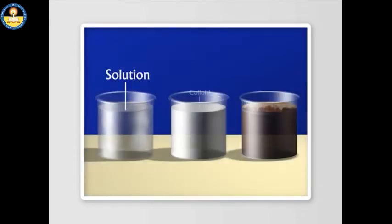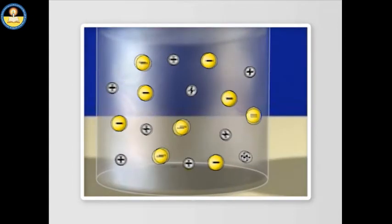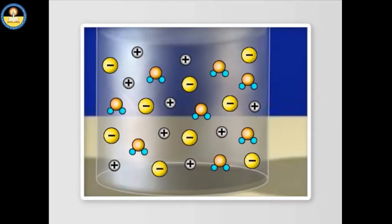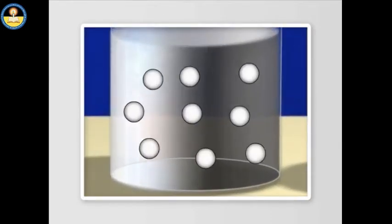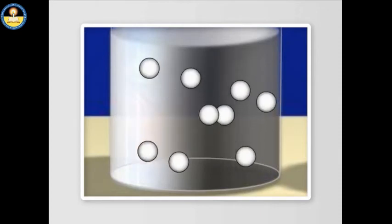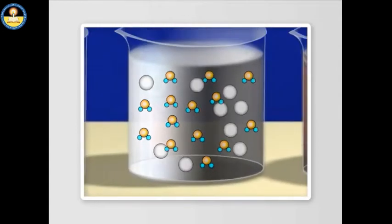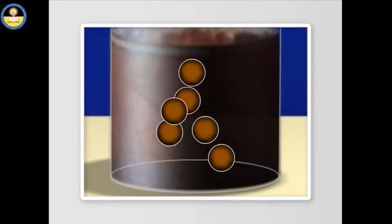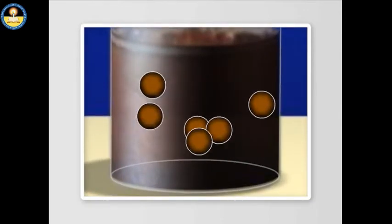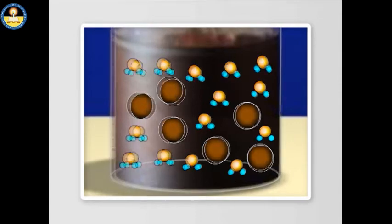From the activities performed, we conclude that the size of particles in true solutions is too small to be visible. The size of particles in colloids is also small but bigger than those in true solutions — colloidal particles are big enough to scatter a beam of light. On the other hand, particles of suspension are big and can be seen with the naked eye, and their size is greater than the size of particles in colloidal solutions.